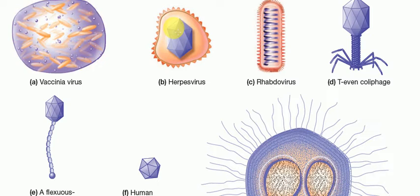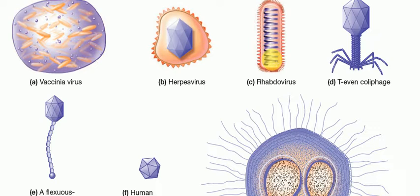The herpes virus is made up of protein coated around an icosahedron. The icosahedron is made up of proteins only. For rhabdo virus, it consists of a nucleic acid inside with a somewhat irregular type of protein wall. Then there is the T-even coliphage, which is a bacterial phage — a typical bacterial phage, also called lambda.